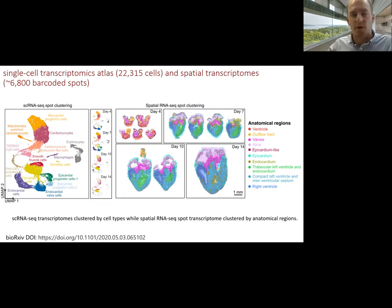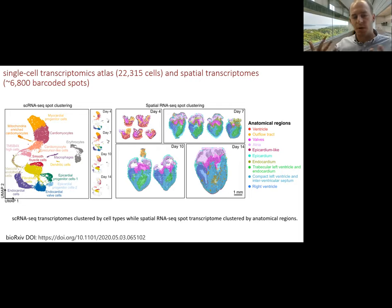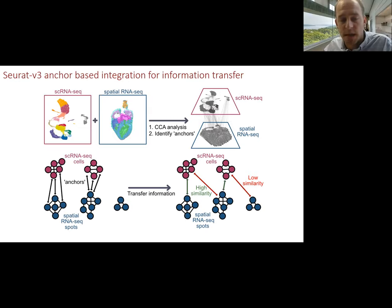To integrate the single cell and spatial data, we used Seurat V3 with anchor-based integration. This approach first identifies anchors between datasets representing pairwise correspondences between elements originating from the same biological states, then uses these anchors to harmonize the datasets by learning a joint structure via canonical correlation analysis. This allows us to transfer the cell type labels defined by marker gene expression from the single cell RNA sequencing analysis to the spatial maps. Since these spots are 50 microns in size — with maybe on the order of 10 cells per spot — each spot can consist of a weighted mix of different cell types, and we can use prediction scores from label transfer to obtain weights for the composition of the local spot.